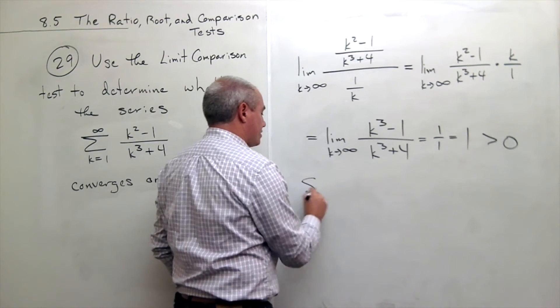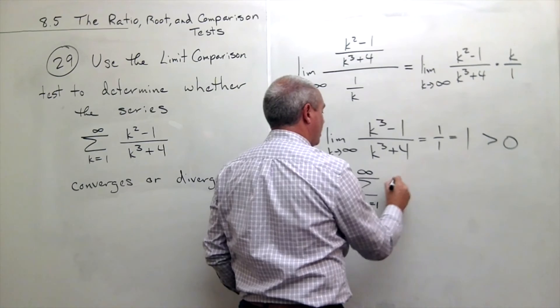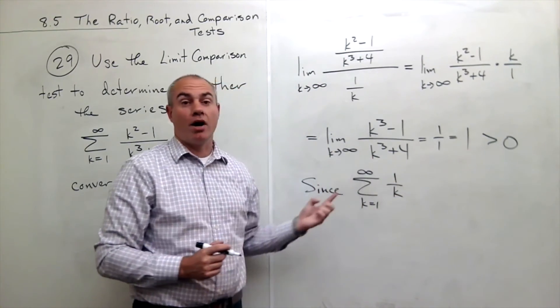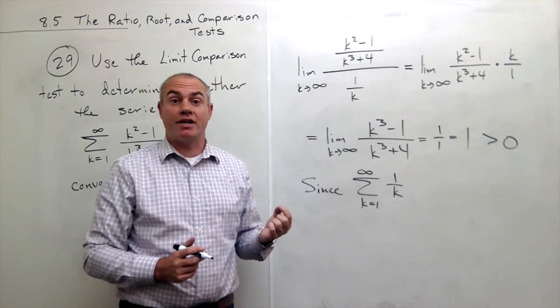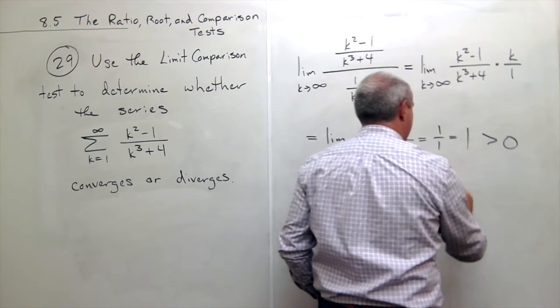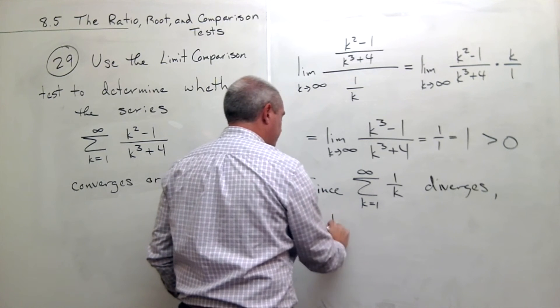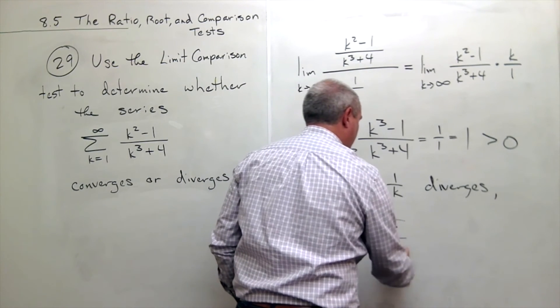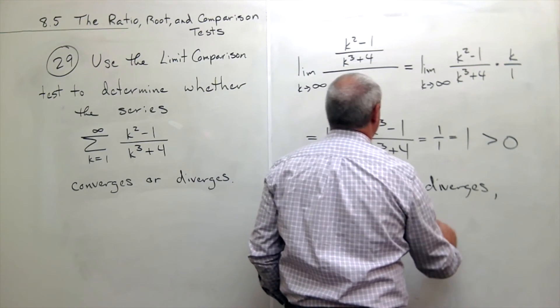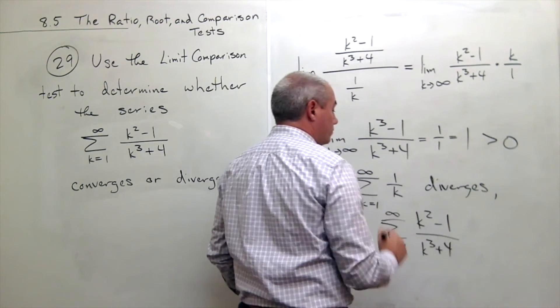So since I do know something about the sum k going from 1 to infinity of the 1 over k's, what do we know? Well, this is what we call the harmonic series and the harmonic series diverges. So since this series diverges, we know that the sum k going from 1 to infinity of k squared minus 1 over k cubed plus 4 diverges.